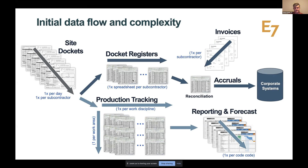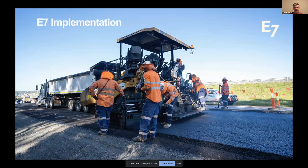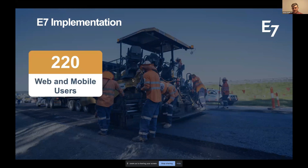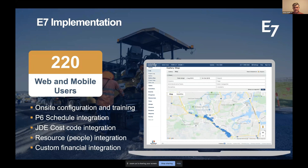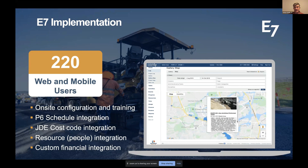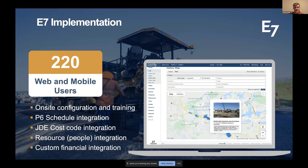When we came to the project, the first thing we did was configure the system and set up users. We now have around 220 web and mobile users on that project. Configuration involved a combination of on-site and remote training, integration of the P6 schedule, JDE cost codes, the HR system via API, and custom financial integrations — allowing all users to capture data and visualize it as the basis for daily data-driven decision making.